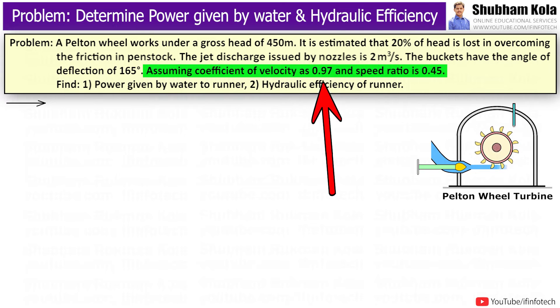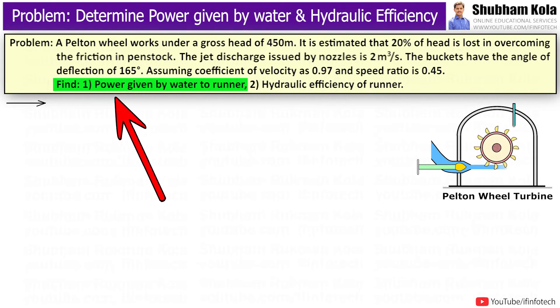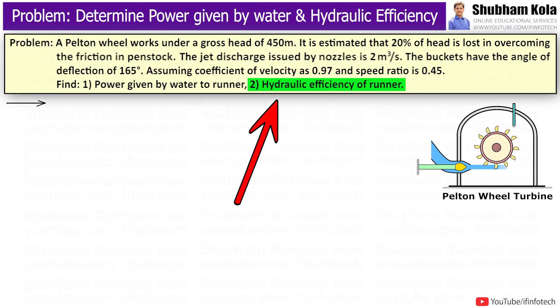Assuming coefficient of velocity as 0.97 and speed ratio as 0.45, find power given by water to runner and hydraulic efficiency of runner.